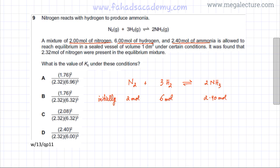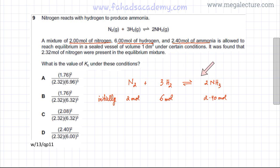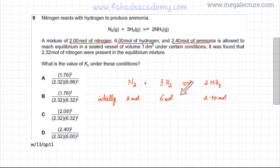These are the initial moles before equilibrium is established. Once added, the forward and backward reactions begin. If more forward reaction occurs, ammonia moles increase and reactant moles decrease. Conversely, if the equilibrium shifts left and more backward reaction occurs, reactant moles increase and product moles decrease.